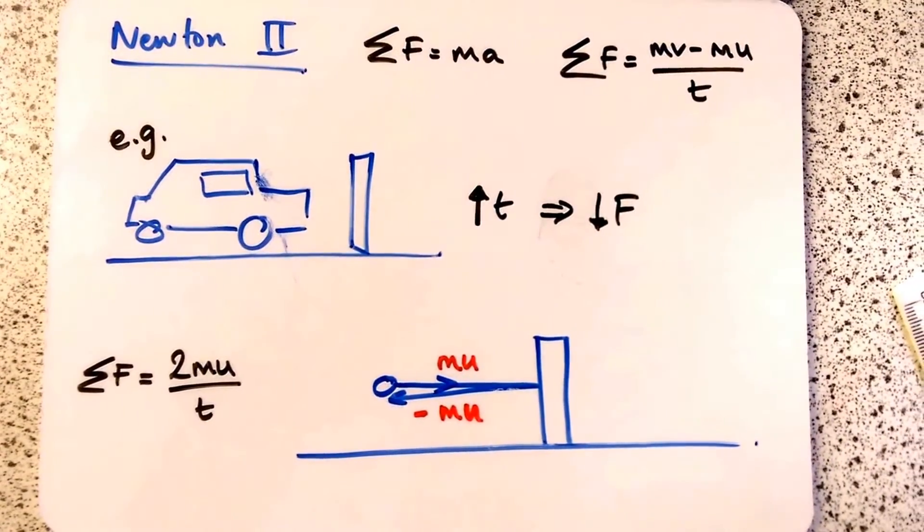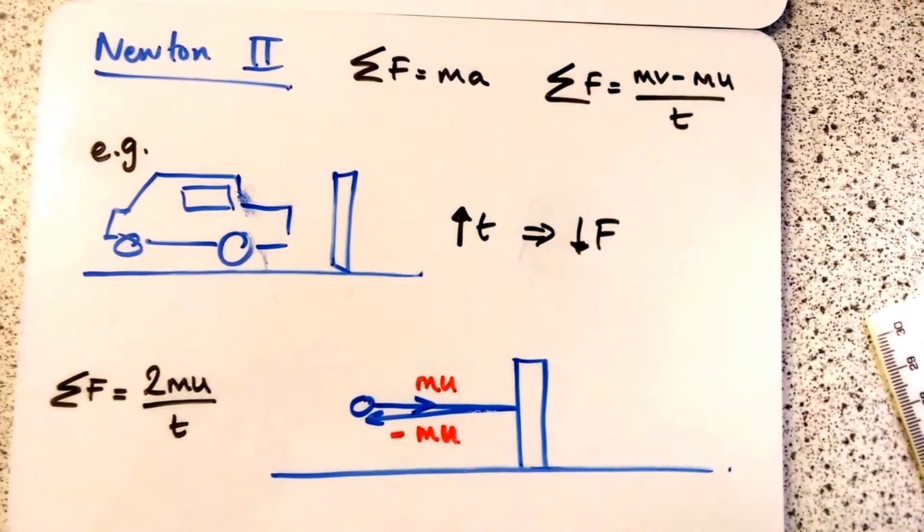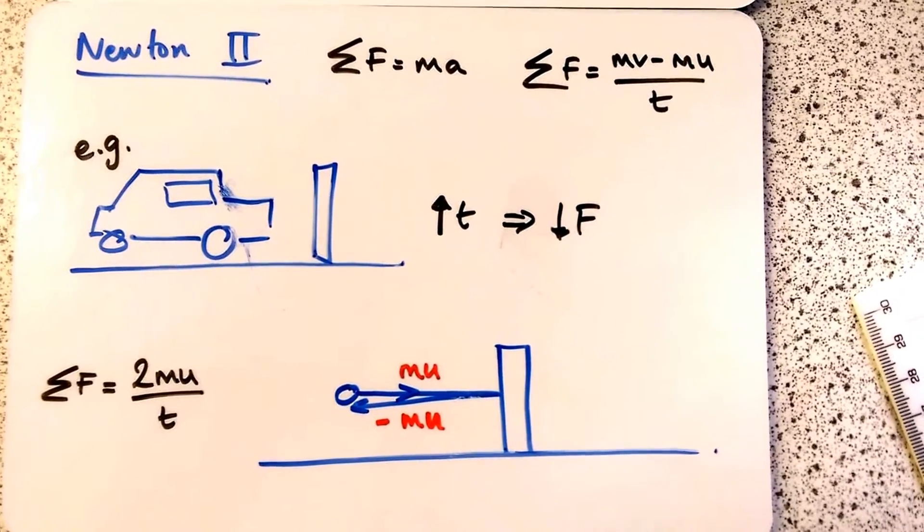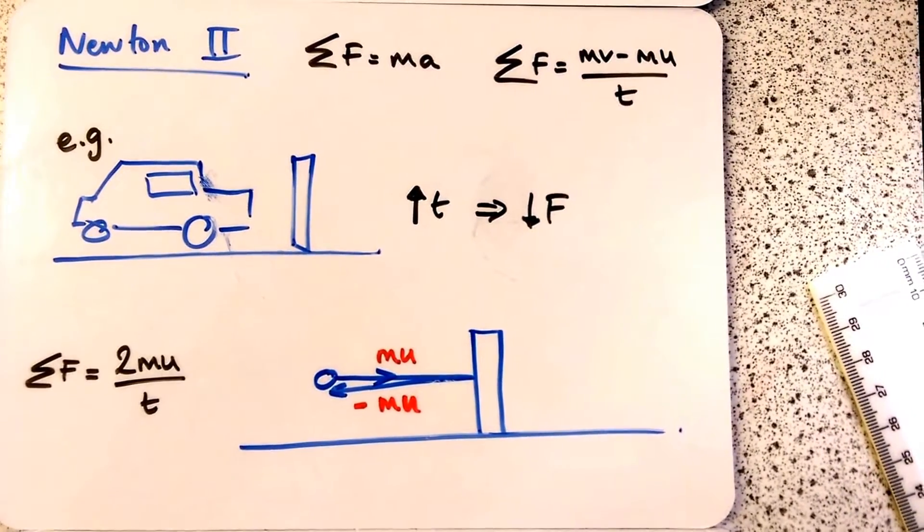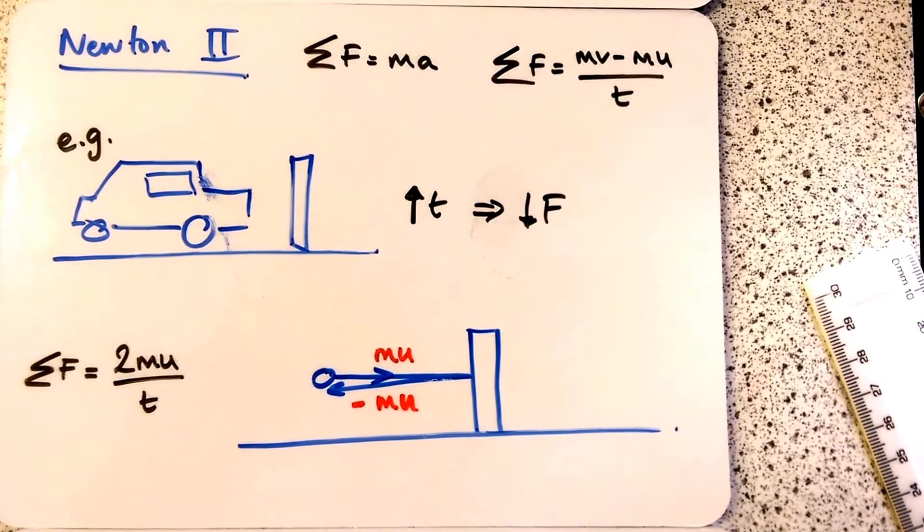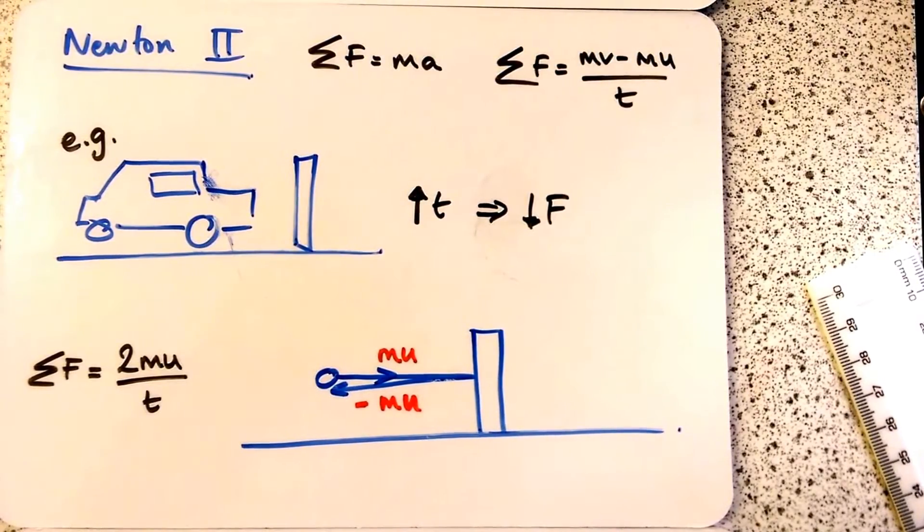Newton's second law is F equals ma. More specifically, it's resultant force equals mass times acceleration. But you will need to upgrade your knowledge and start quoting it and discussing it as a rate of change of momentum: mv minus mu over t, a rate of change of momentum.